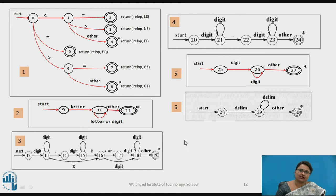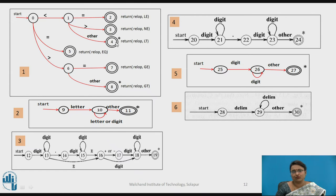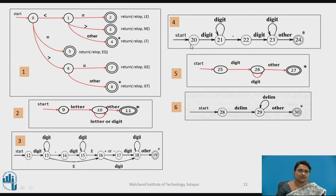Consider this scenario: all the earlier transition diagrams are combined. The first transition diagram starts with state 0 and has accepting states 2, 3, 4, 7, and 8. The second starts at state 9, the third at 12. The last state of the first diagram is 8, so the next starts at 9; last state of the second is 11, so the next starts at 12. The last state is 19, so the next transition diagram starts at 20; the fifth starts at 25 and the sixth at 28. For this implementation, we consider these five transition diagrams.